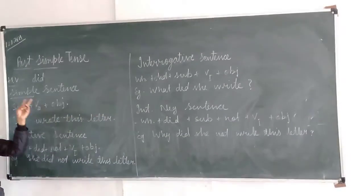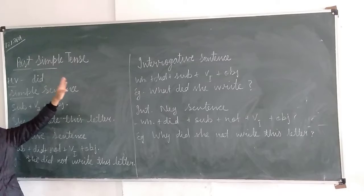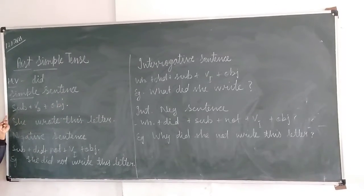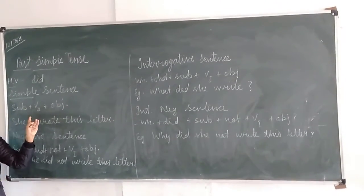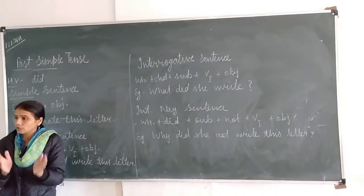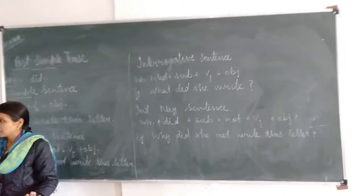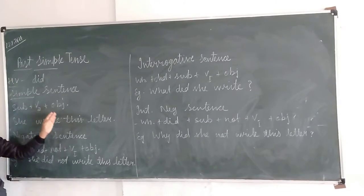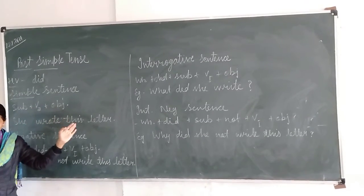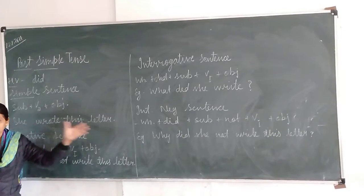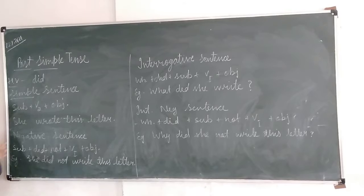So first of all, the simple sentence of past simple tense. Sentence structure is subject, then verb second form. Because past — what do you understand by past? It means that particular action is already completed. So we will use second form. Main verb we will use in second form, then object. Example: she wrote this letter. Write is the first form and wrote is the second form of write.